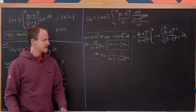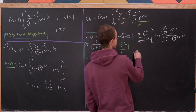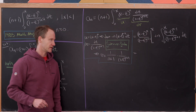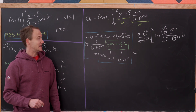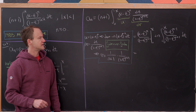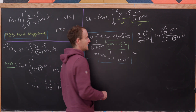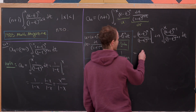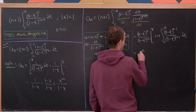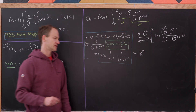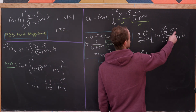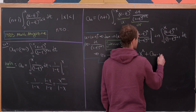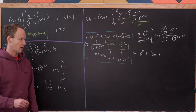Evaluating the boundary term: plugging in t equals x gives zero in the numerator, so only t equals 0 contributes, giving x to the n over 1, with a minus sign from the lower bound. So the boundary term is minus x to the n.